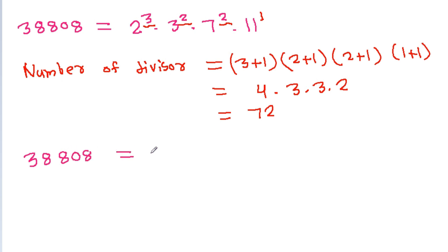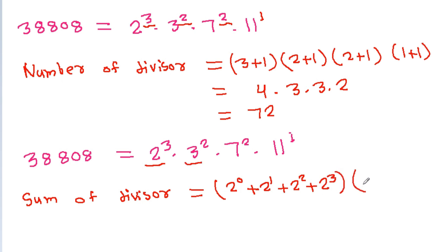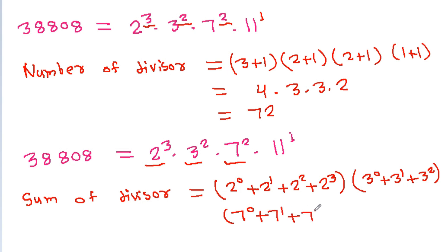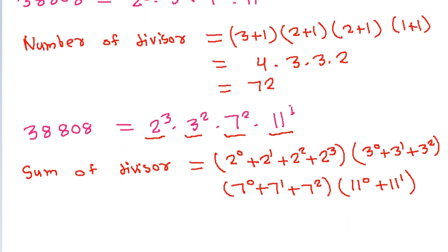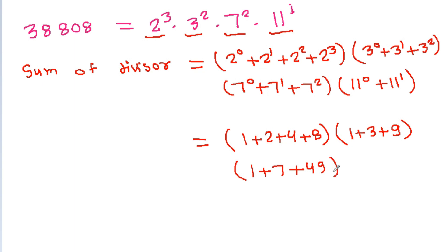And 38808 is 2 cubed times 3 squared times 7 squared times 11 power 1. So the sum of divisors will be: we have 2 cubed, so it will be (2 power 0 plus 2 power 1 plus 2 power 2 plus 2 power 3) times, we have 3 squared, so (3 power 0 plus 3 power 1 plus 3 power 2) times, and we have 7 power 2, so (7 power 0 plus 7 power 1 plus 7 power 2) times, we have 11 power 1, so (11 power 0 plus 11 power 1).